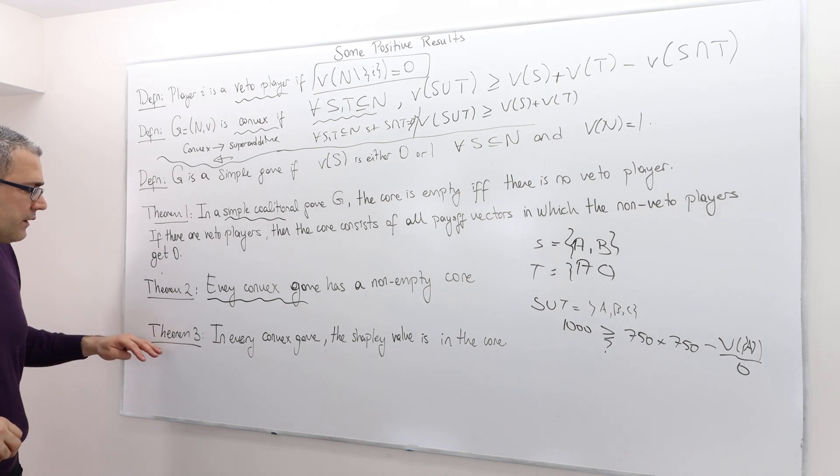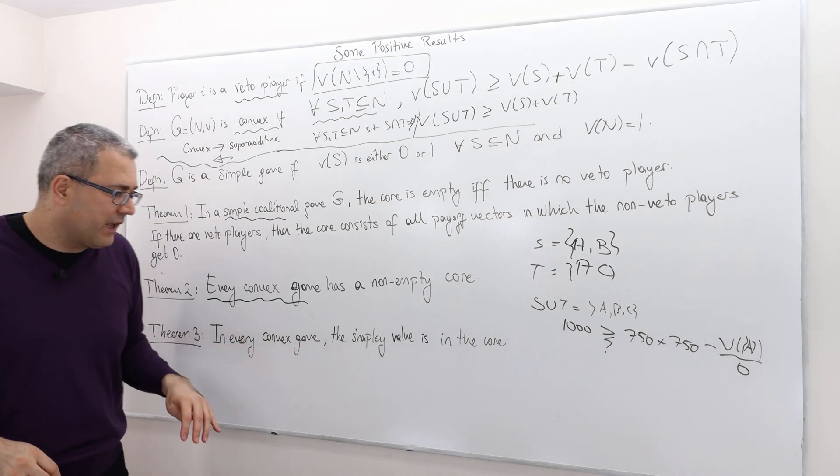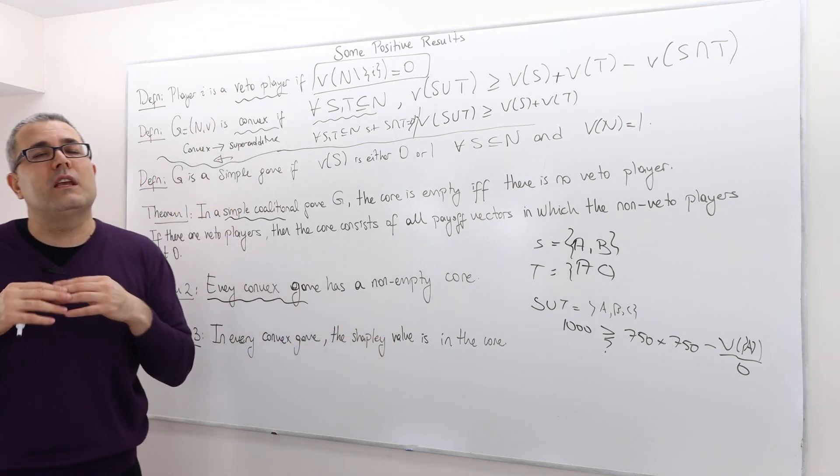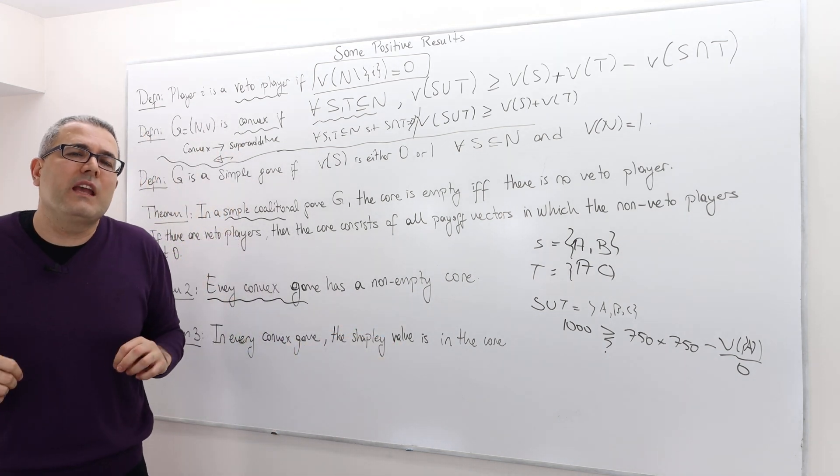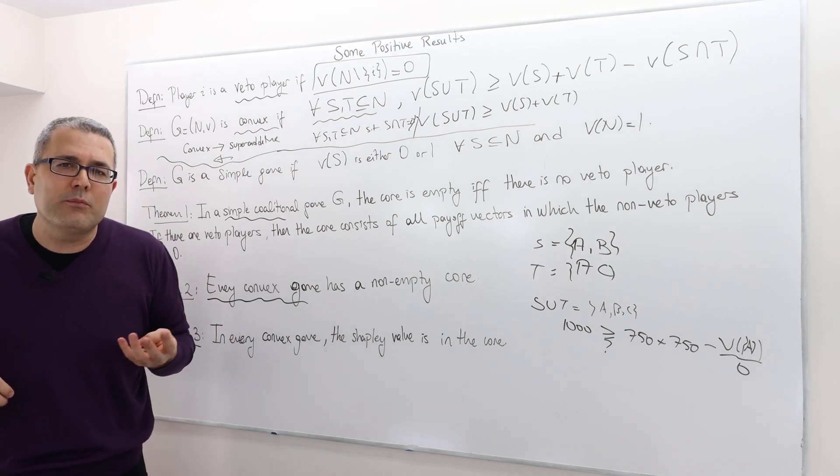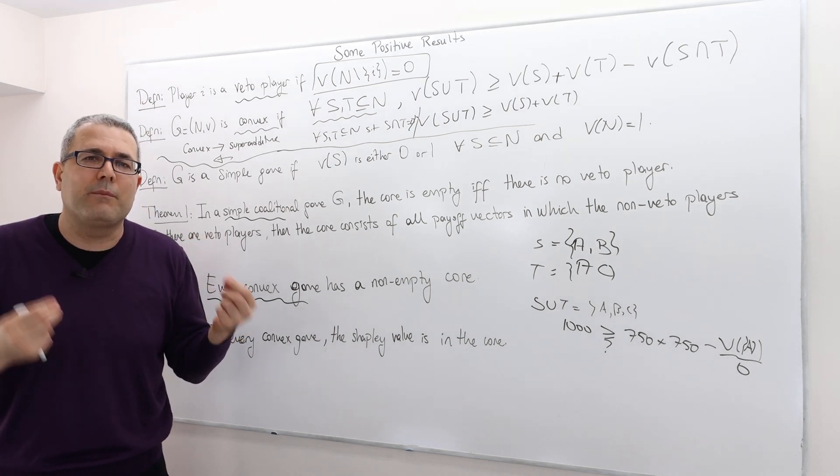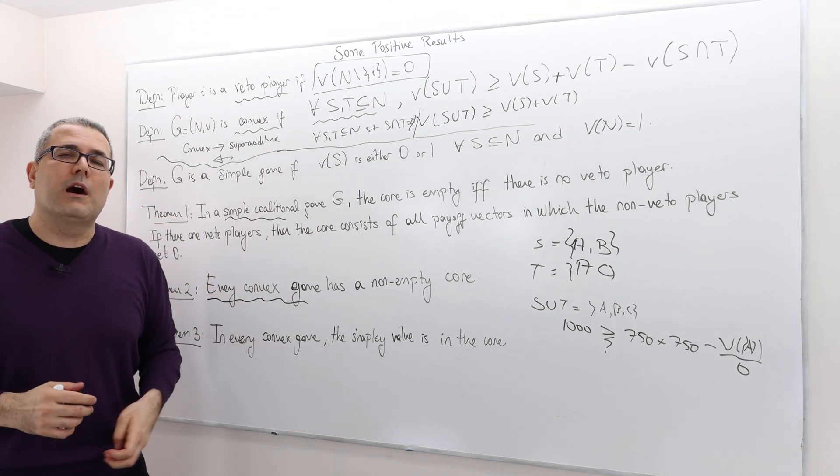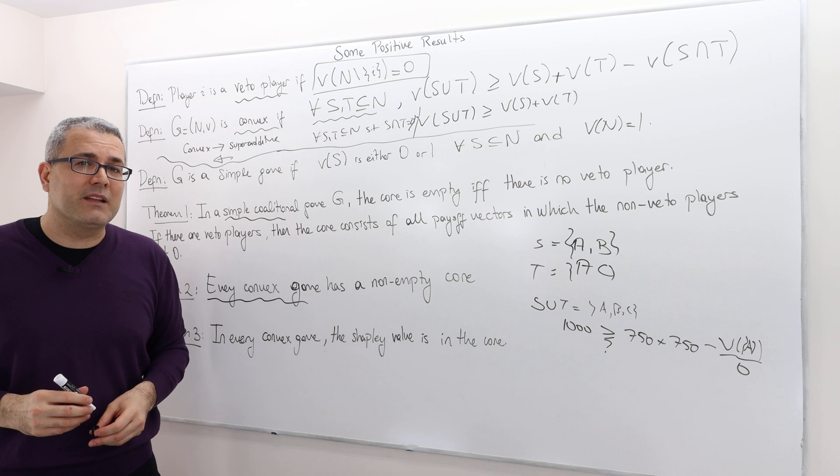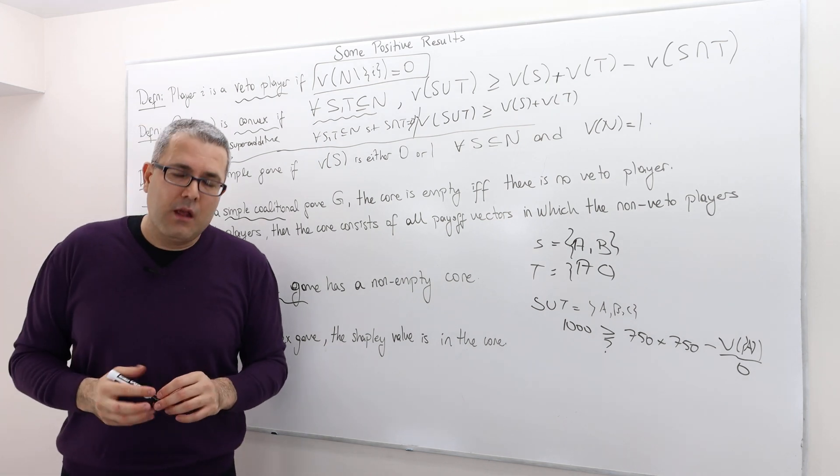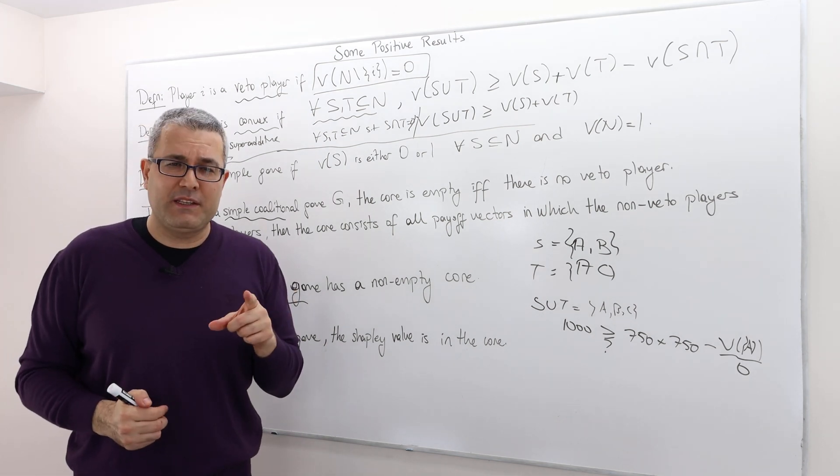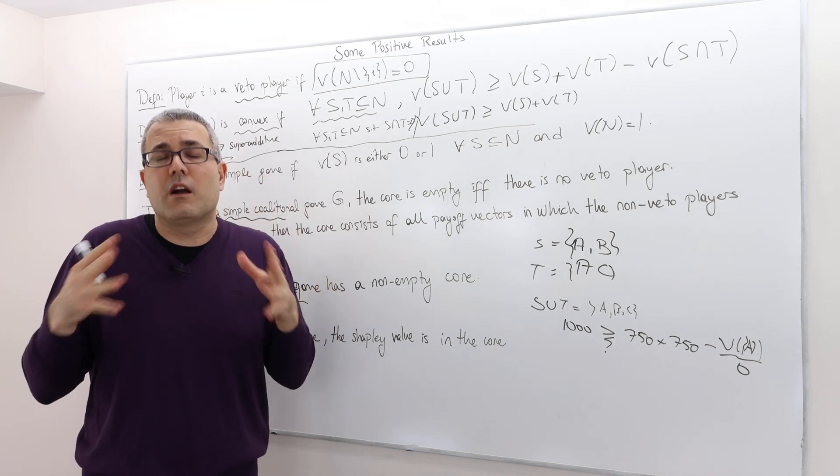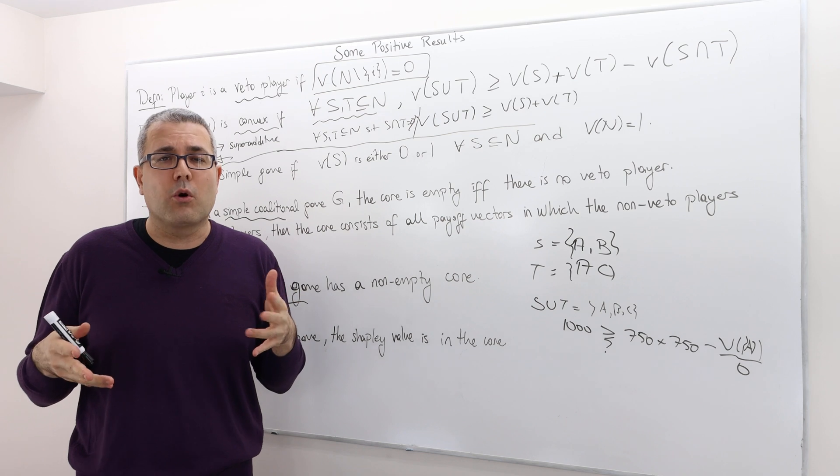The third theorem says every convex game, the Shapley value is in the core. This is even better. So you don't really have to make a guess and verify approach. Just use the Shapley value, because the Shapley value is going to give you a stable outcome. If you remember, the ice cream example, we calculated the Shapley value, and we showed that, and we argued that it is not stable. So meaning it's not in the core.